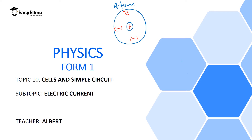In this lesson we are going to discuss electric current, and we are going to define electric current as the rate of flow of charges. Now, what type of charge can move? It is only electrons which can move. So when we define electric current as the rate of flow of charges, we are going to study electrons — electrons moving per unit time.